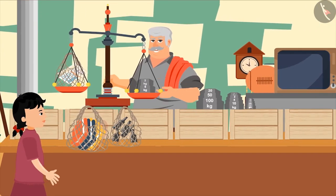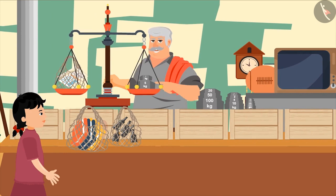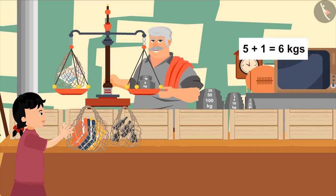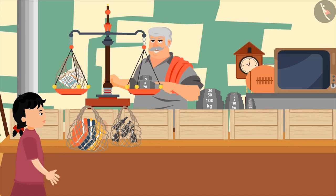"Now let's replace the two kg weighing stone by one." "Uncle look, now the sides are balanced and the needle also points at the center. That means the weight of the newspapers is five and one, means six kgs." "Very good!"